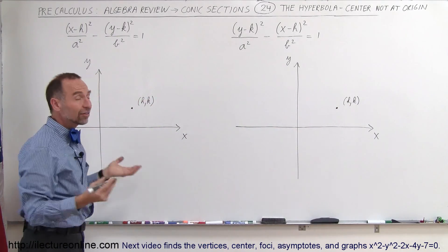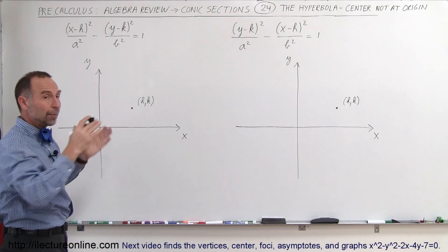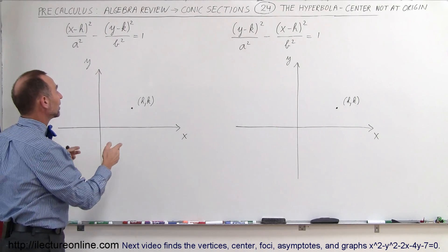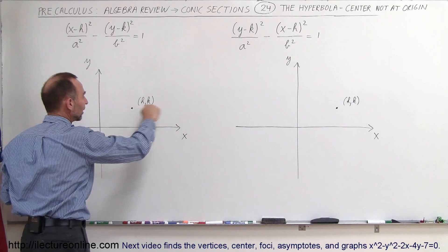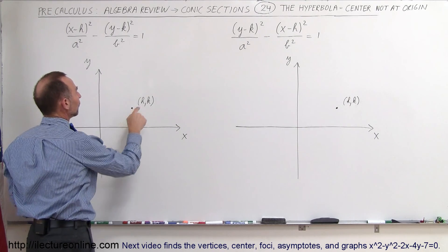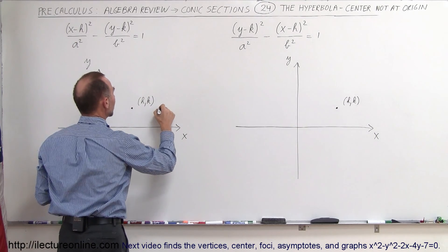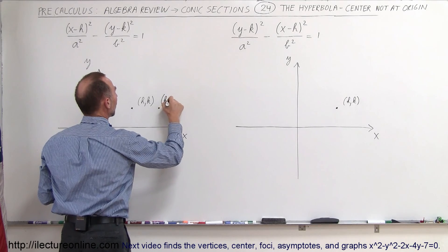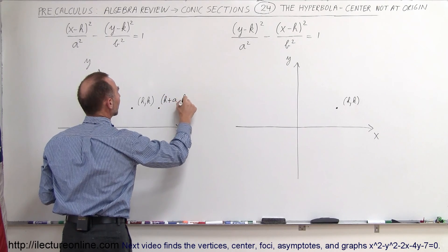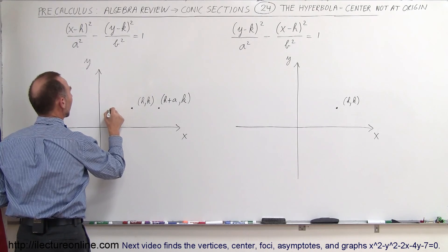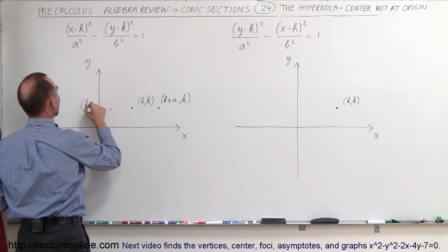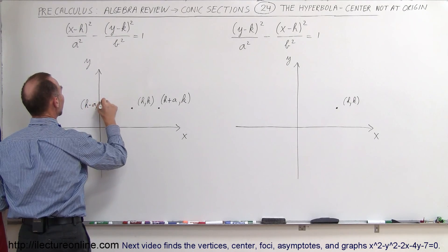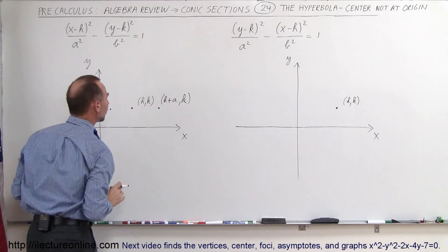All right, now, the next thing we want to do is we want to draw that box again. Then we realize that the vertices are going to be on this axis right here, on the horizontal axis, and so the vertices are going to be found over here at h plus a and k for y, and over here at h minus a and k. So those are the vertices.